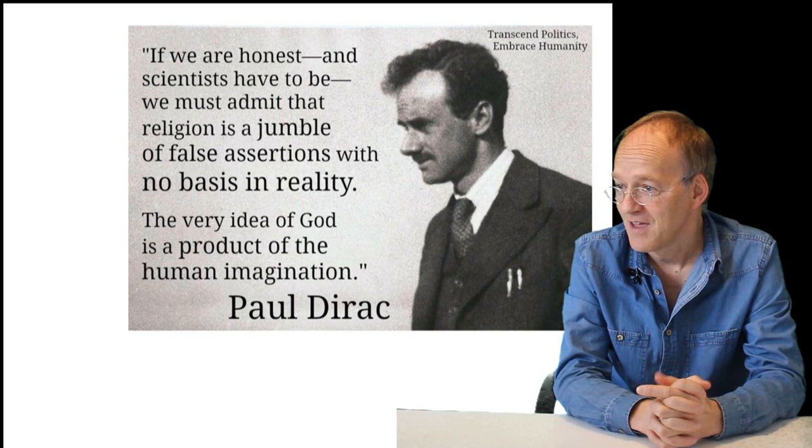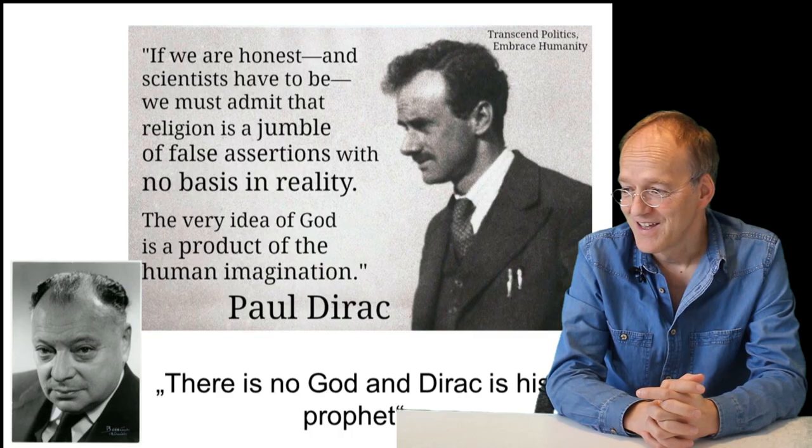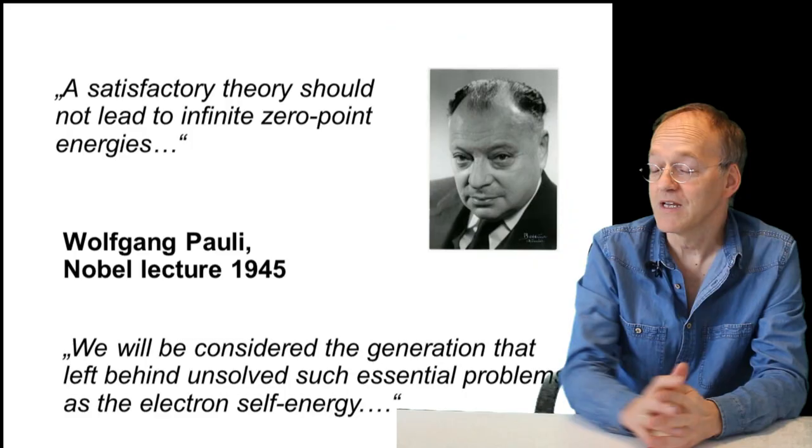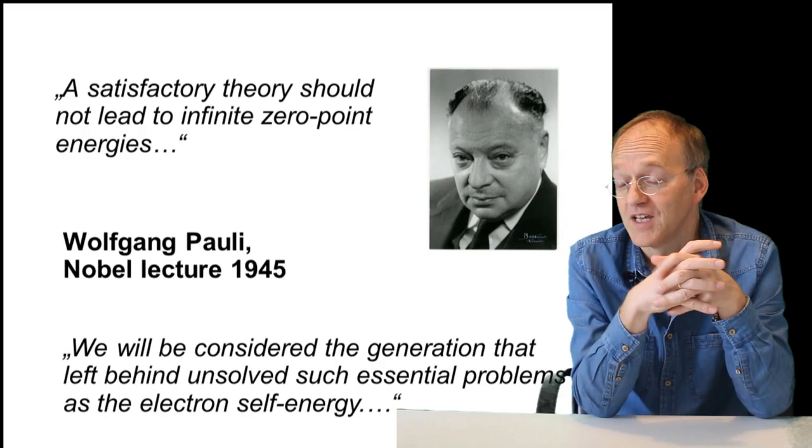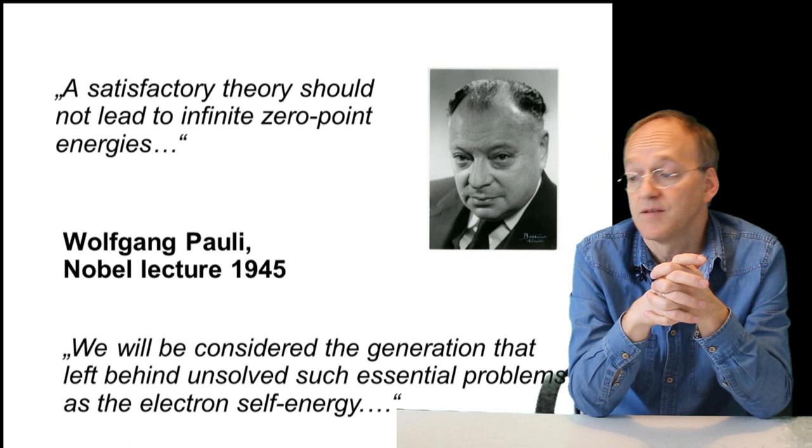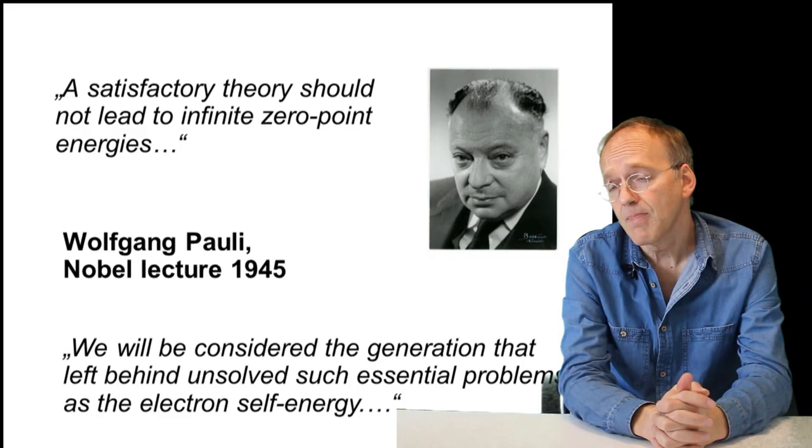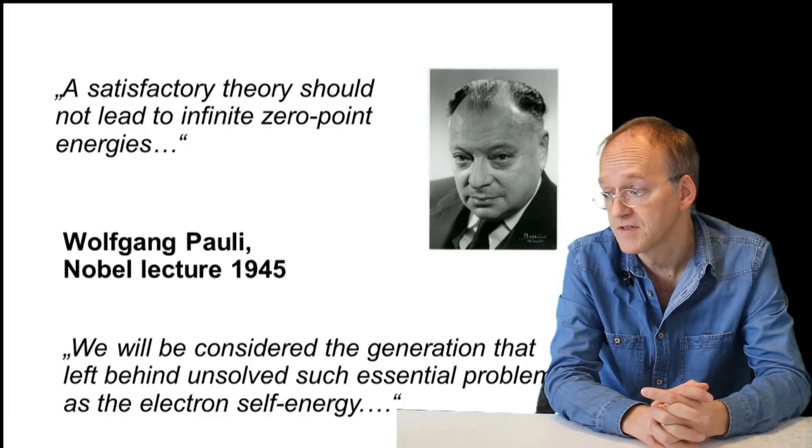Wolfgang Pauli, who always quipped, commented: 'There is no God and Dirac is his prophet.' But Pauli, however, agreed that this problem with the electron was really not solved. In his Nobel lecture in 1945, Pauli said that a satisfactory theory should not lead to infinite zero-point energies. That means he also considered it an absurd system to deal with this renormalization process. Pauli also said: 'We will be considered the generation that left behind unsolved essential problems such as the electron self-energy.' Well, this is unsolved.